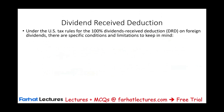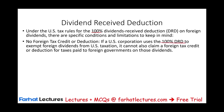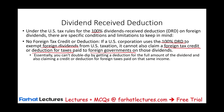There are additional rules for the DRD you need to be aware of. To get the 100% dividend received deduction, there are specific conditions and limitations. If the U.S. corporation uses 100% of the DRD to exempt foreign dividends, that's fine. But if you do so, you cannot use any foreign tax credit or any deduction for taxes paid to the foreign government, because that would be double dipping. If you receive the income and it's basically tax-free because you used the DRD, then you also want to get a foreign tax credit or a deduction for the taxes you paid in Australia — well, that's double dipping. You cannot deduct the full amount of the dividend and at the same time claim a credit or deduction for foreign taxes paid.